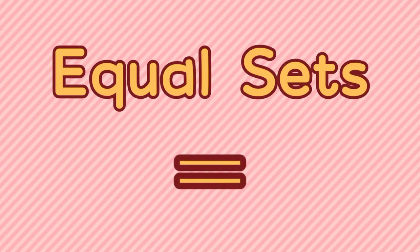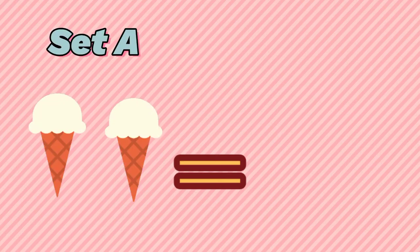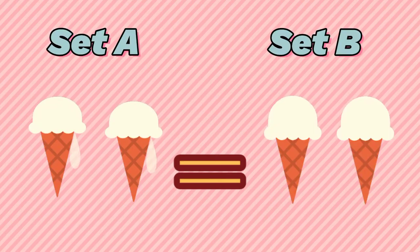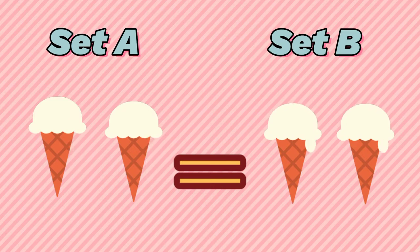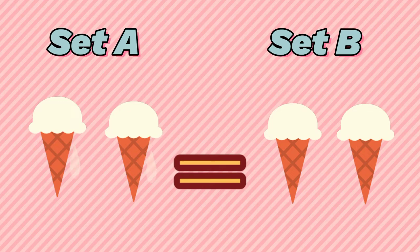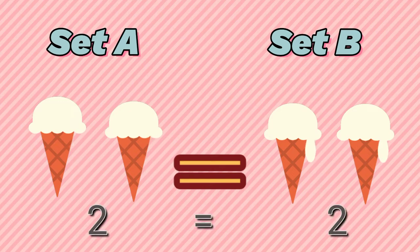Now, let's talk about equal sets. You can say that sets are equal when set A and set B have the same objects and the same number of objects. So you can say that 2 ice creams is equal to 2 ice creams.